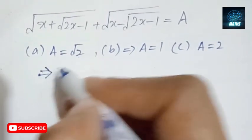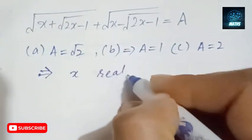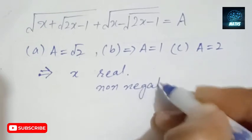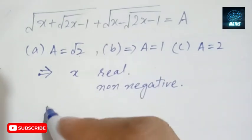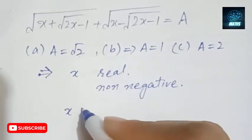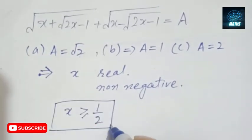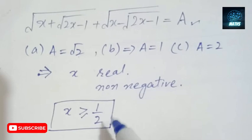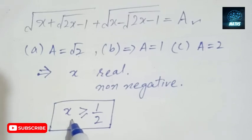The two terms are clear that the values of x are real and non-negative. From this square root, x will be greater than or equal to 1/2. This is clear. The values of x are greater than or equal to 1/2.